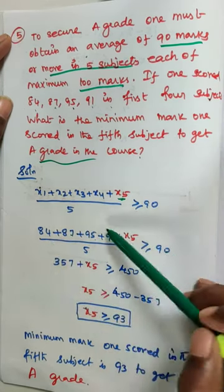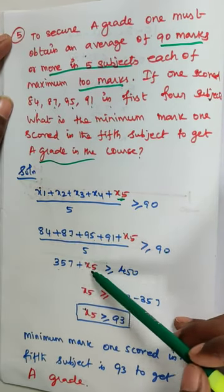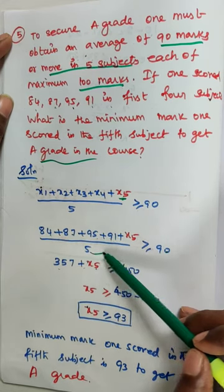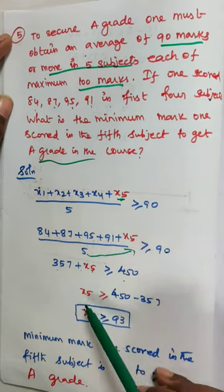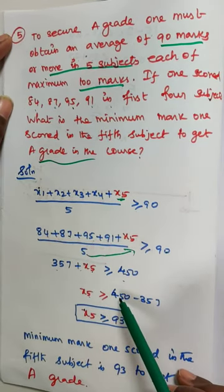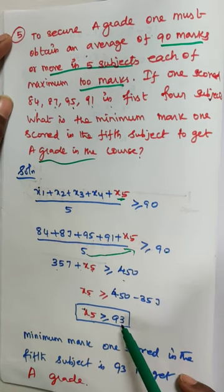So if you add these 4 what will you get? Now I am going to take this right hand side. So 5 into 90 is 450. Now x5 is greater than or equal to 450 minus 357. So x5 is greater than or equal to 93.